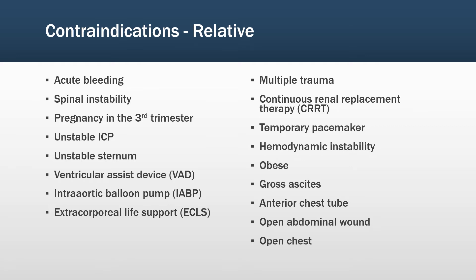Some of the potential contraindications include acute bleeding, spinal instability, pregnancy in the third trimester, unstable intracranial pressure, unstable sternum, the requirement of a ventricular assist device or an intra-aortic balloon pump, extracorporeal life support or ECMO, multiple trauma, the requirement for CRRT or continuous renal replacement therapy, a temporary pacemaker or hemodynamic instability, obesity, gross ascites, an anterior chest tube, an open abdominal wound, or an open chest.